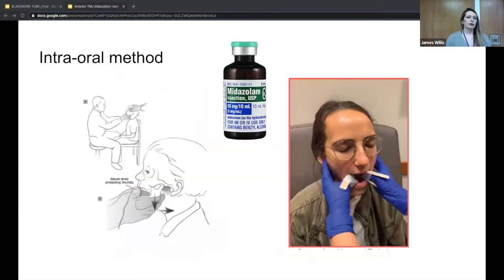The intraoral method is probably the method we most commonly think of. This is also the method that was described by Hippocrates. This will require sedation and analgesia because it's a very painful and anxiety-provoking procedure. Out of all the articles I read, Versed is recommended for sedation because it's also a muscle relaxant, as opposed to propofol or ketamine or other sedating agents. In patients who have a lot of comorbidities that you're more worried about using sedation with, you can consider auriculotemporal nerve blocks or deep temporal nerve blocks, or even infiltration of the TMJ space with lidocaine.